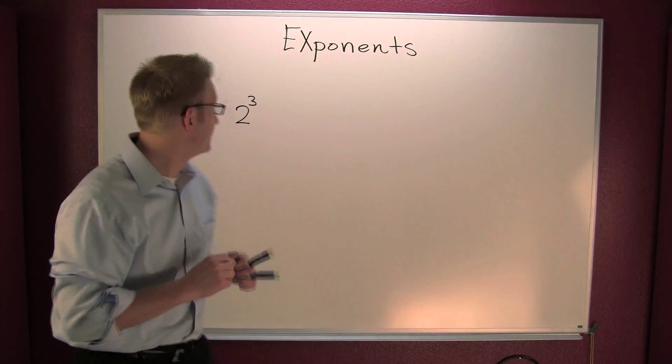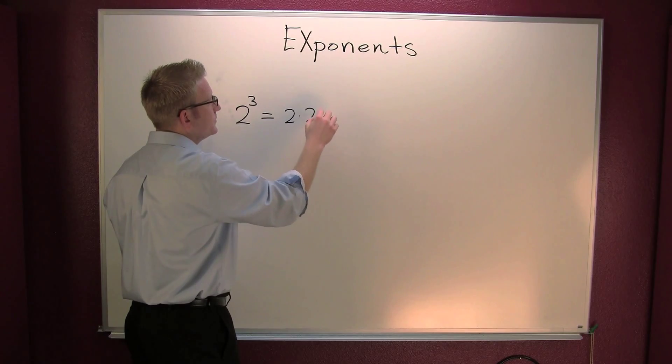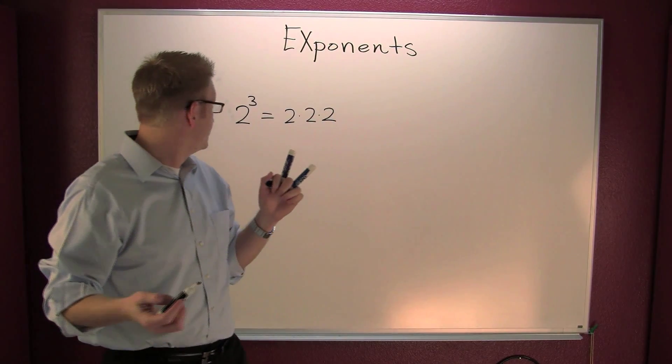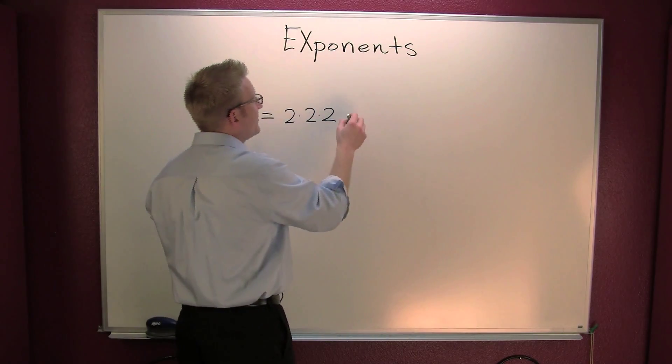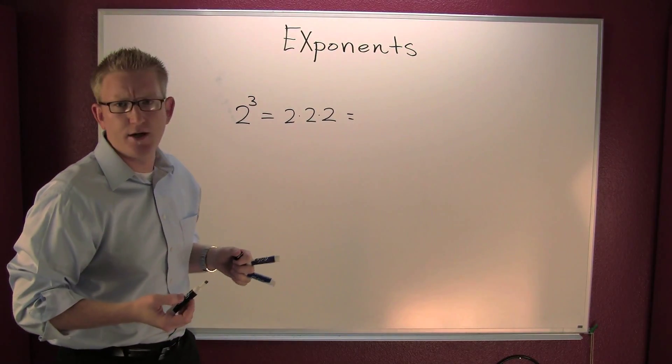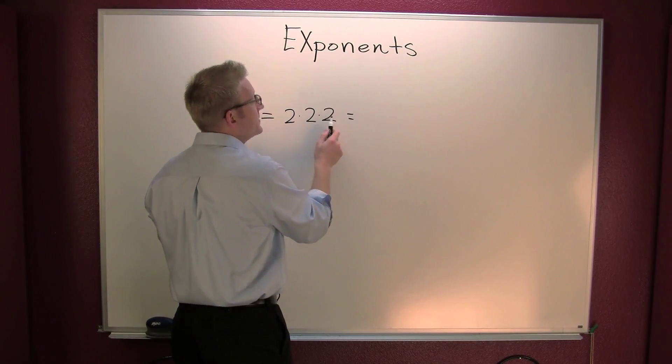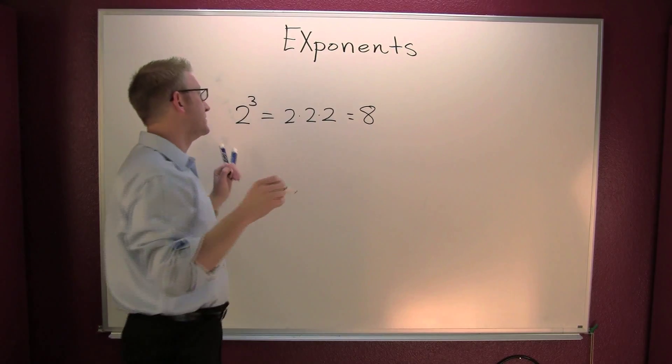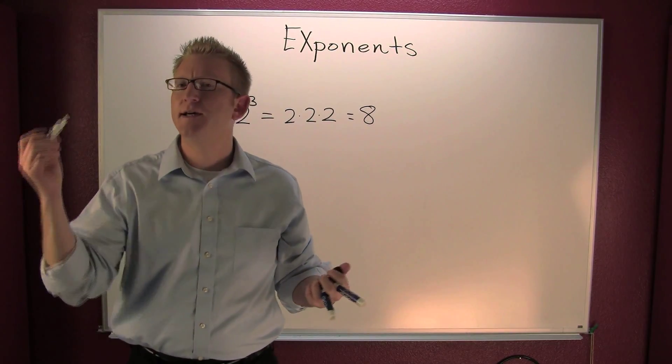We can see this as two times two times two, three times. And then we can simplify that up. Multiplication is a binary operation. Two times two is four, times two is eight. So we have two to the third power is eight.